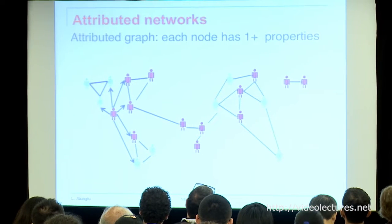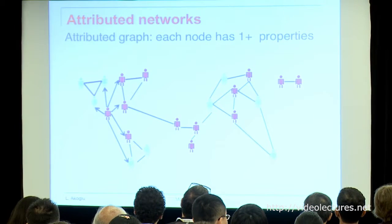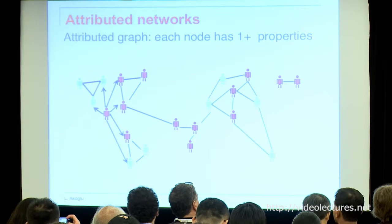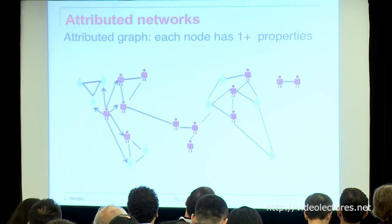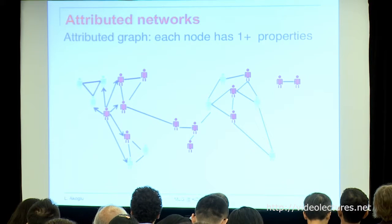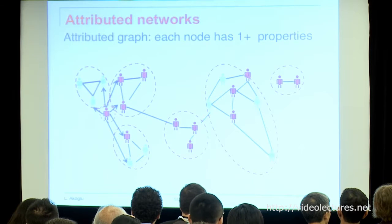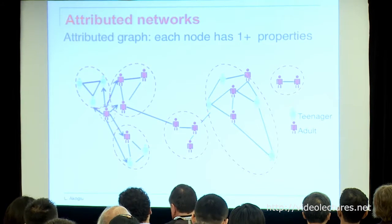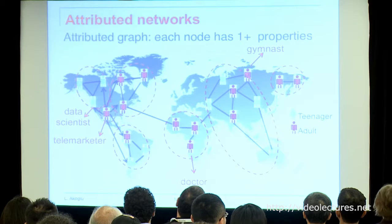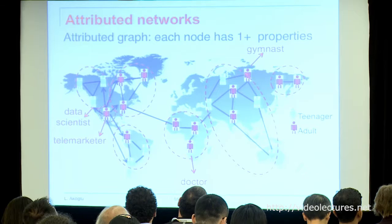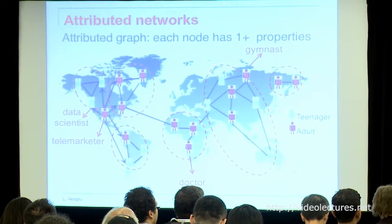I'm going to focus on a very special kind of heterogeneous network called an attributed network. It would be a homogeneous graph with the same type of nodes and edges — such as individuals doing phone calls or emailing each other — where each node would be associated with one or more properties. You would have these individuals calling each other, but in addition you would know the age of the person, maybe their location, job titles, education level, likes, political leanings, and all that. So you have a homogeneous network, plus a vector of attributes associated with the nodes — that's what I'll call an attributed graph.